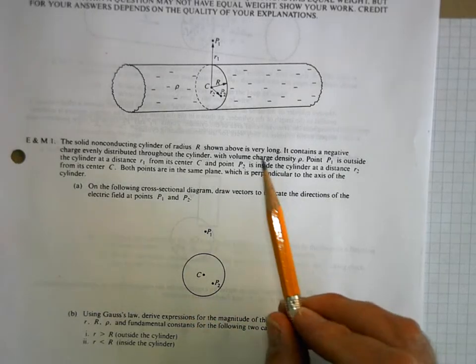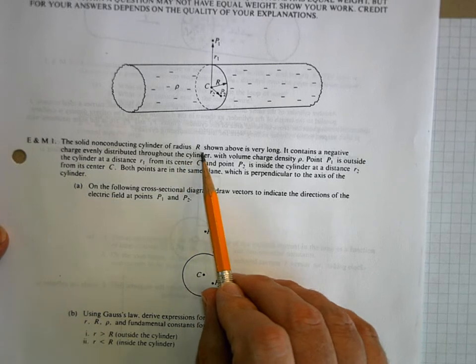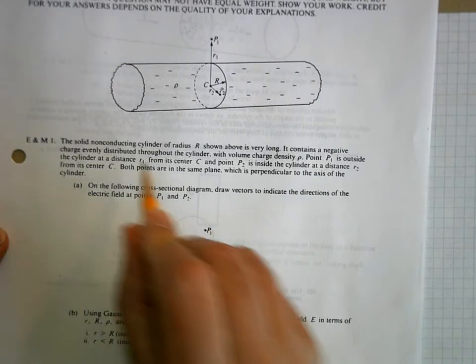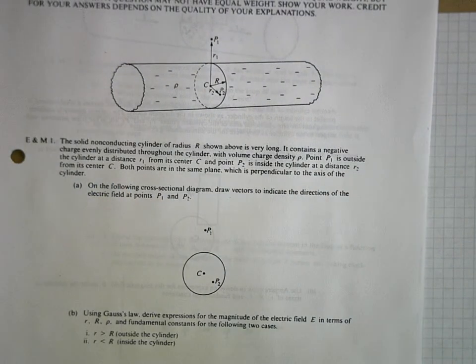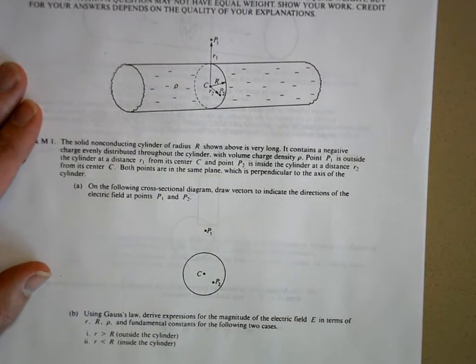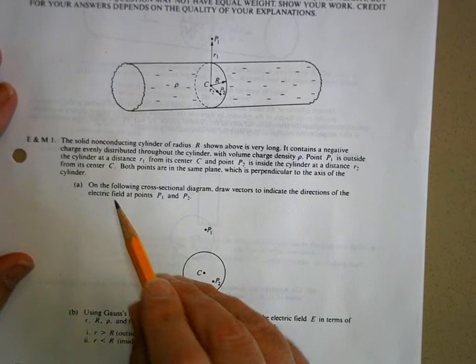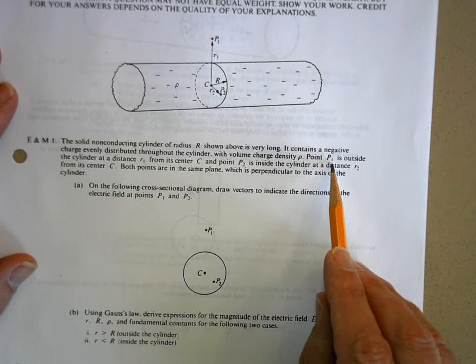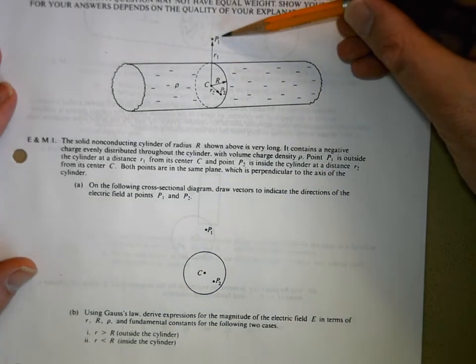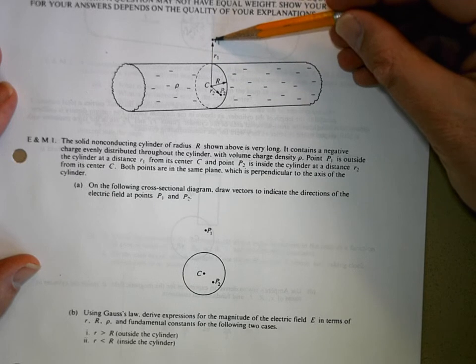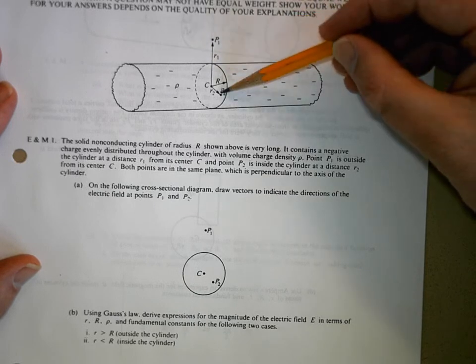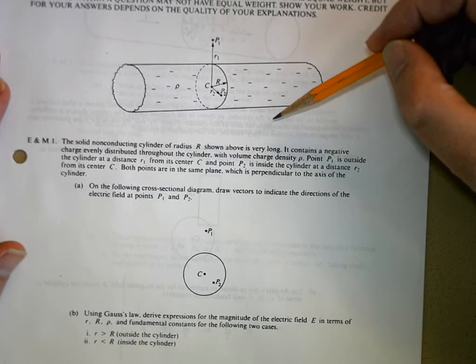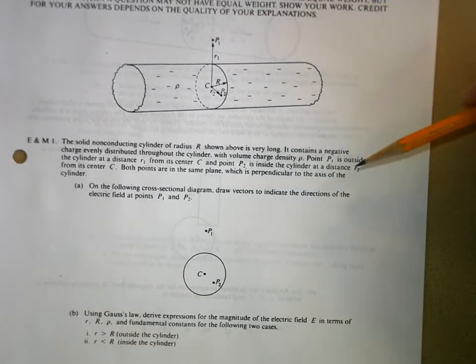Except that they give you this solid non-conducting cylinder of radius R, shown above as very long. It contains a negative charge evenly distributed throughout the cylinder. That's a really important little phrase there. So pay attention to that. Evenly distributed throughout the cylinder with volume charge density of ρ. Point P1, where is point P1? Right there. It's outside the cylinder at a distance R1 from the center C. And point P2, right there, is inside the cylinder at a distance of R2 from its center. Both points are in the same plane, which is perpendicular to the axis of the cylinder.